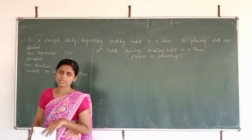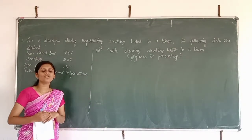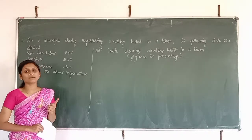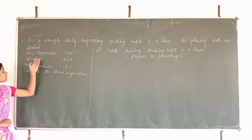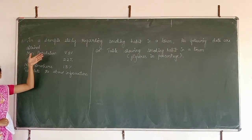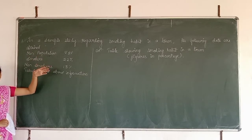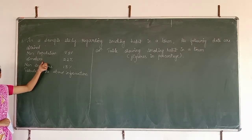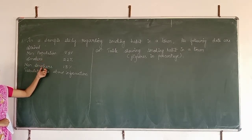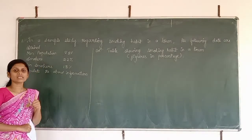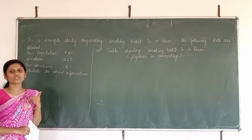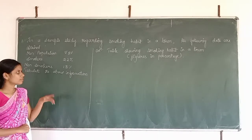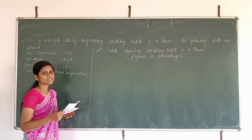Now we are going to draw the body of the table. To draw the body, we need to know how many columns and rows are required. First, we see how many variables are given. The first variable is gender — we divide it as men and women population. The second variable is smoking habit — we divide it as smokers and non-smokers. So two variables are considered here.